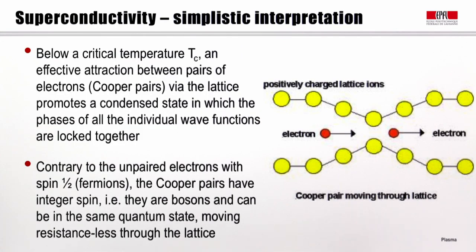We have no pretension in this course to explain the physics behind superconductivity, but let's give a very simplistic interpretation of what happens at a microscopic scale. Below a critical temperature referred to as Tc, there's an effective attraction between pairs of electrons, which we call Cooper pairs. That attraction happens through the lattice and promotes a condensed state in which the phases of all the wave functions are locked together. Contrary to unpaired normal electrons, which have spin 1/2 and are fermions, the Cooper pairs have integer spin — that means they are bosons — and therefore they can be in the same quantum state and move resistancelessly through the lattice.